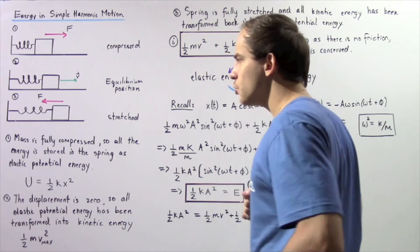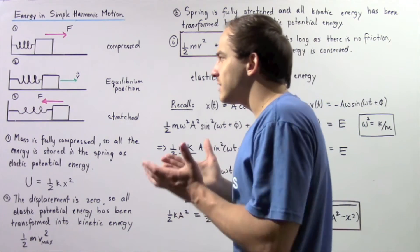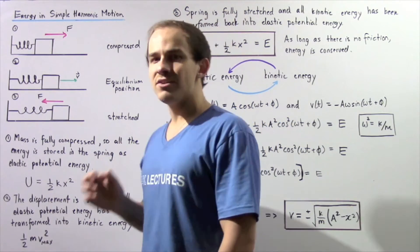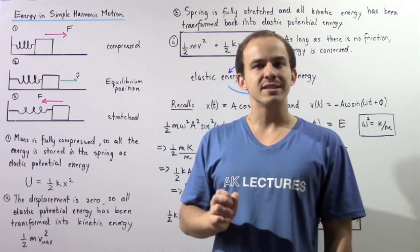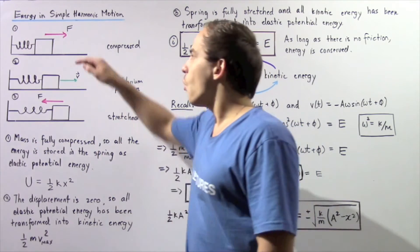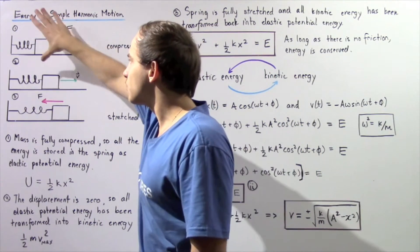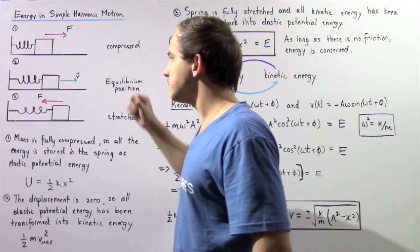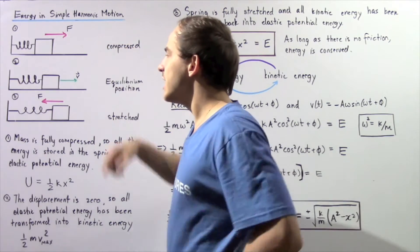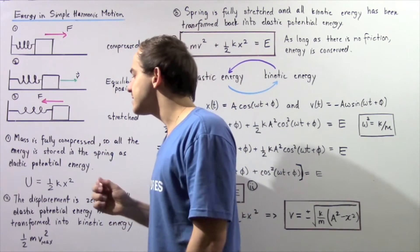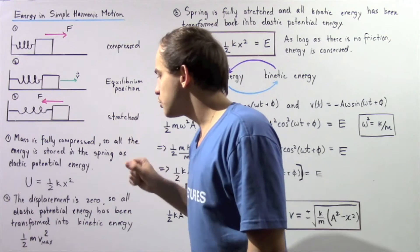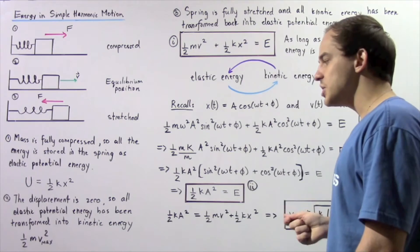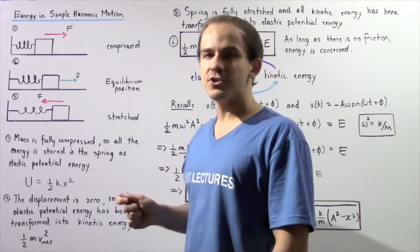In position 2, the spring is neither compressed nor stretched — the displacement is zero. So there is no elastic potential energy. All the elastic potential energy from position 1 has been transformed into kinetic energy, giving the object its velocity. At diagram 2, displacement is zero, so all elastic potential energy has been converted into kinetic energy.